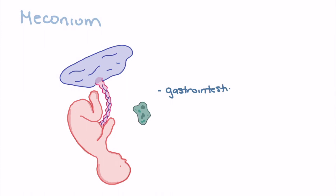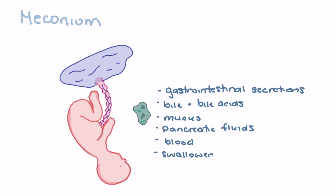Meconium is made up of a number of substances including gastrointestinal fluids, bile and bile acids, mucus, pancreatic fluids, blood, swallowed vernix, lanugo, and cellular debris.